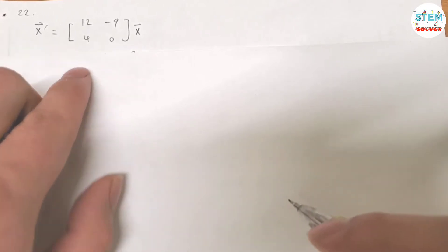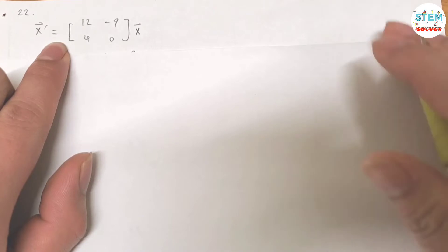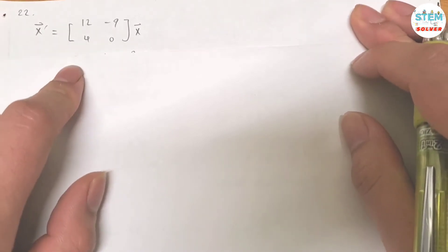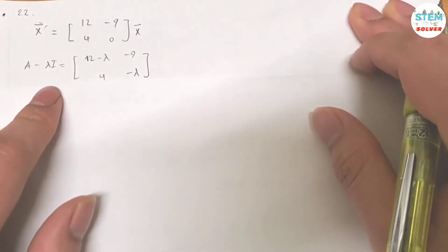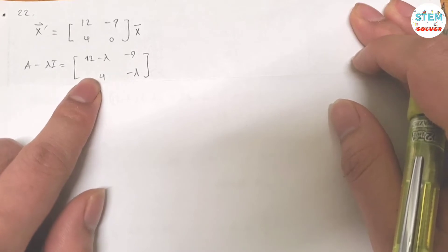To find the general solution of the given system, you are given the system in terms of vector x prime. First of all, you need to find A minus lambda I, which gives you this matrix.